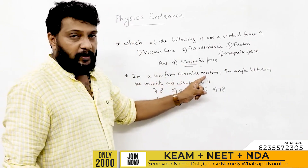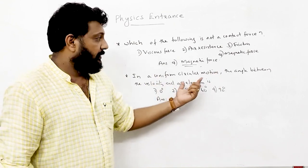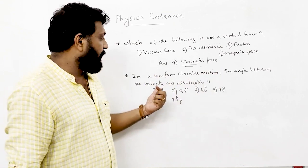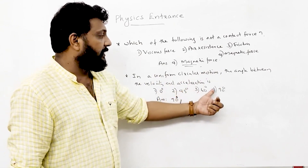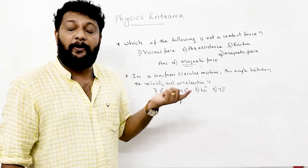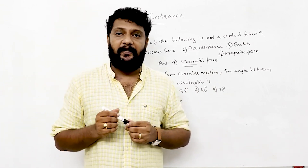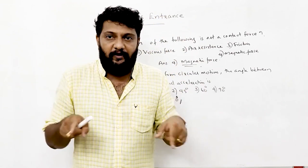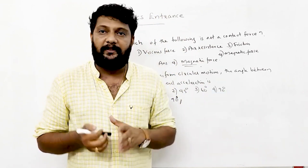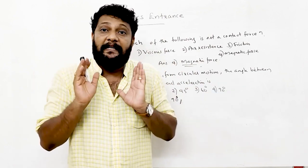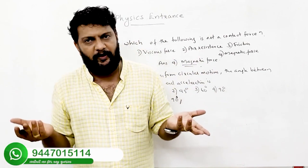In uniform circular motion, the angle between velocity and acceleration. Options are 0 degree, 45 degree, 60 degree, 90 degree. The angle is 90 degrees — they are perpendicular to each other. In uniform circular motion, velocity and acceleration are always at 90 degrees.